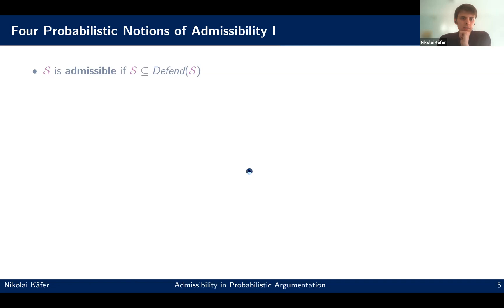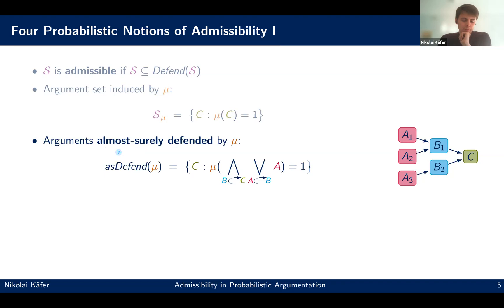Now we want to look how we can reflect admissibility in this context. So how do we get to this notion of self-defense? The first option is to just consider what does it mean for a distribution? What are the arguments induced by this distribution? And one possibility is to just then define here an argument set induced by distribution as all the arguments that hold with a marginal probability of one. And in the same vein, we can also define a notion of defense. So then we call it almost surely defense.